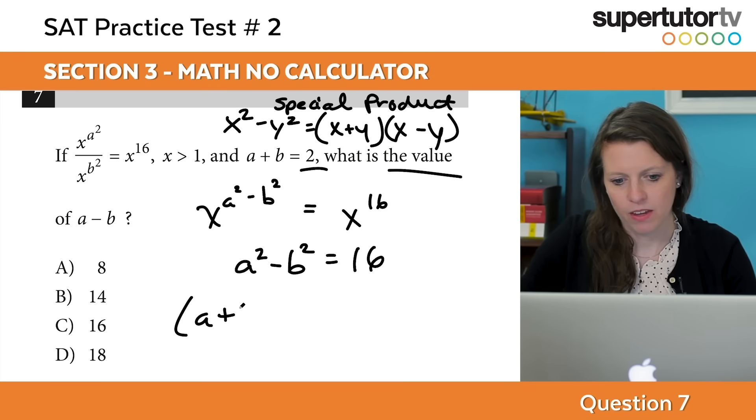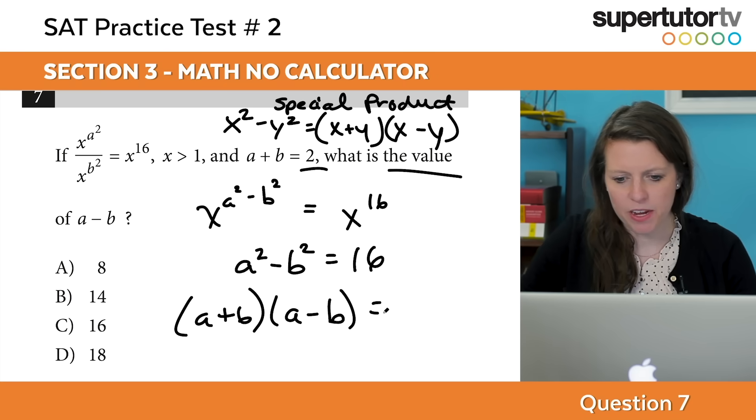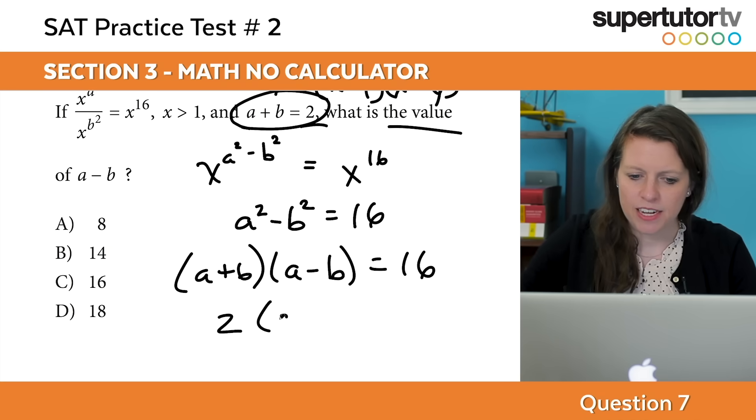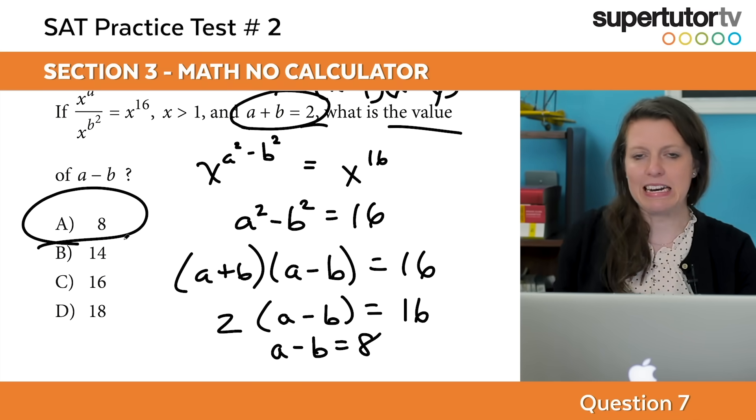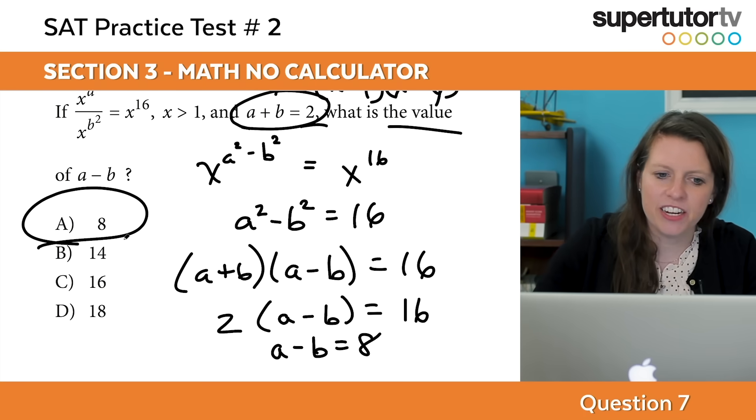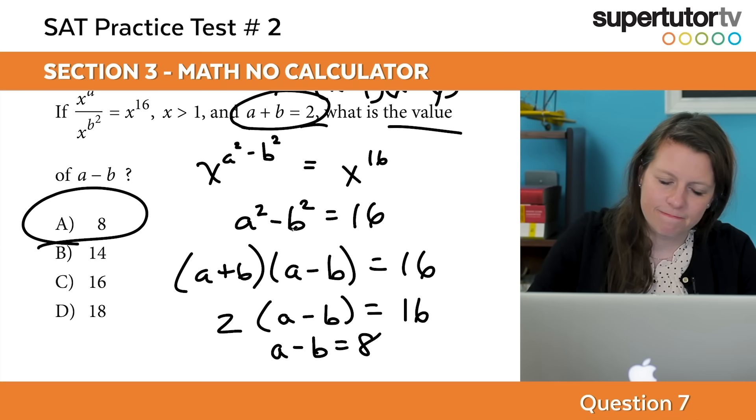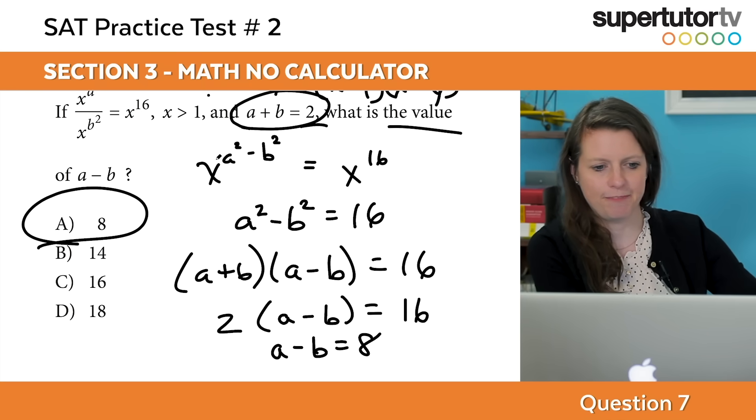This factors to a plus b times a minus b equals 16. We have a plus b equals 2, so this is 2 times a minus b equals 16. I'm just going to divide both by 2 and I get a minus b equals 8. It's that simple. You can plug it in and check if you want. We're in pretty good shape.